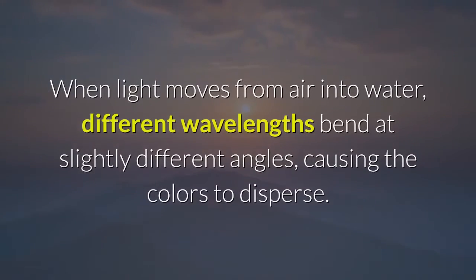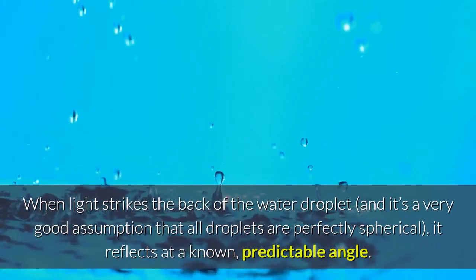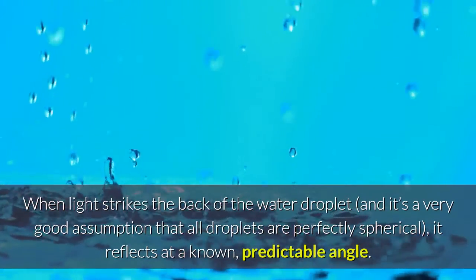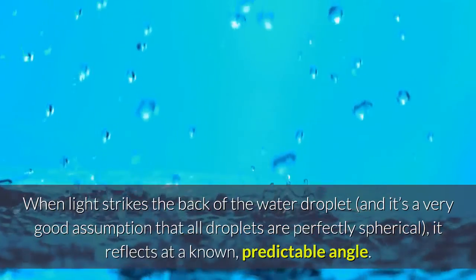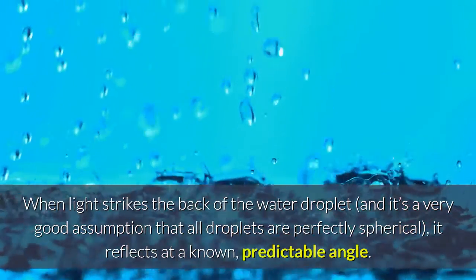When light moves from air into water, different wavelengths bend at slightly different angles, causing the colors to disperse. When light strikes the back of the water droplet, and it's a very good assumption that all droplets are perfectly spherical, it reflects at a known, predictable angle.